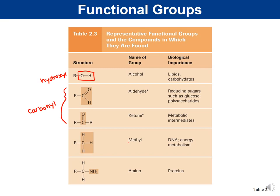A methyl group is a CH3 — a carbon bound to three hydrogens. Methyl groups are used in DNA to mark sequences and affect gene expression, which we'll discuss later in the semester. They're also important for energy metabolism. Amino groups consist of a nitrogen bound to two hydrogens (–NH2). Amino groups are important for proteins — the building blocks of proteins are called amino acids, and the 'amino' part refers to this functional group.